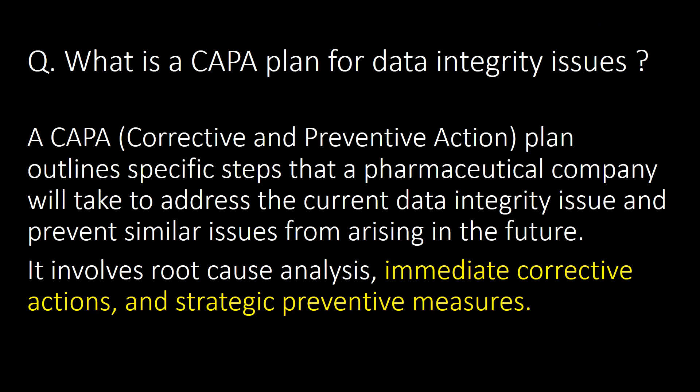What is a CAPA plan for data integrity issues? A CAPA — corrective and preventive action — plan outlines specific steps that a pharmaceutical company will take to address the current data integrity issue and prevent similar issues from arising in the future. It involves root cause analysis, immediate corrective actions, and strategic preventive measures.